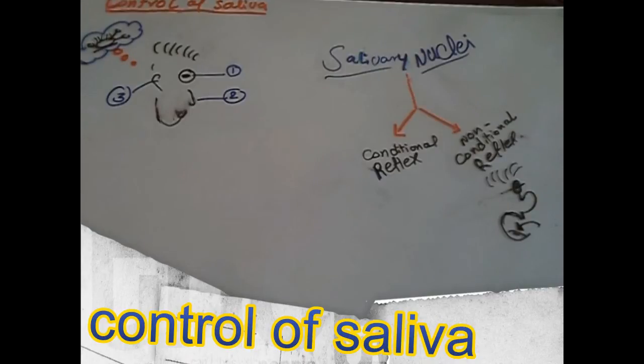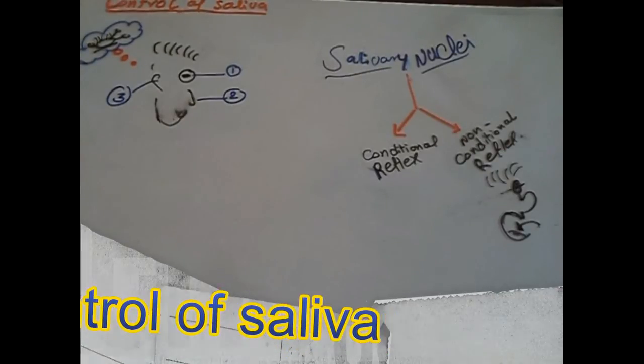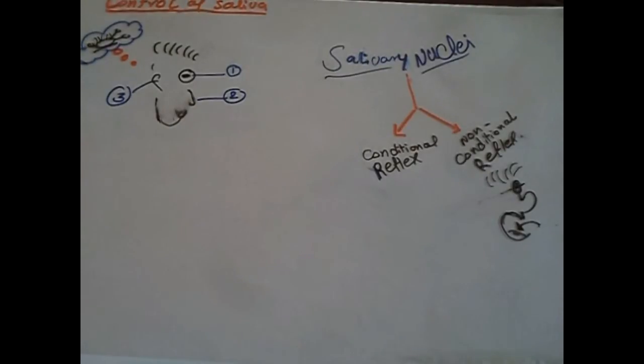What makes salivary secretion occur? What is the stimuli that activate the salivary glands to produce its saliva? The center that controls the salivary secretion in our brain is the salivary nuclei. So, salivary nuclei is the center.